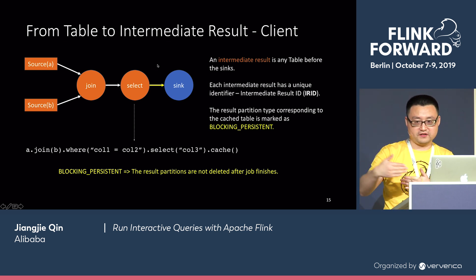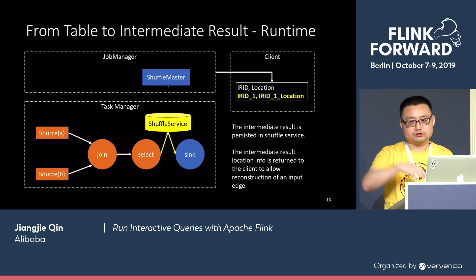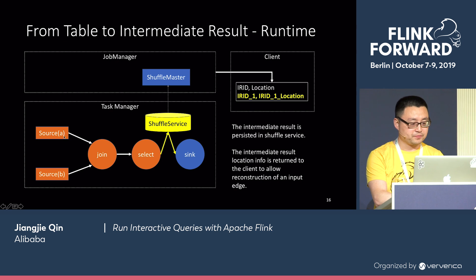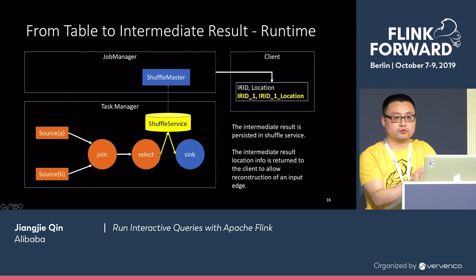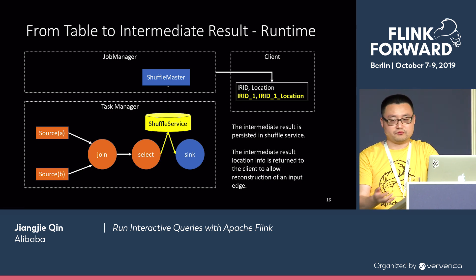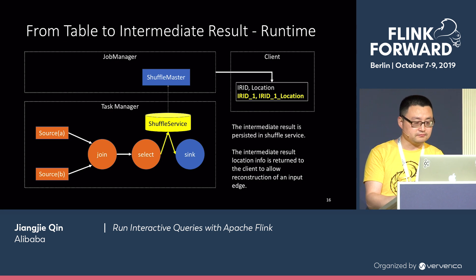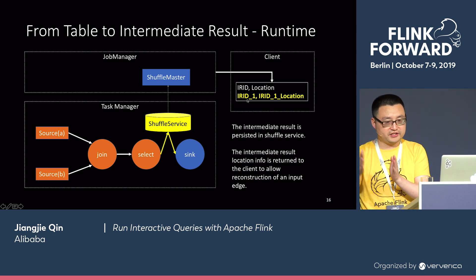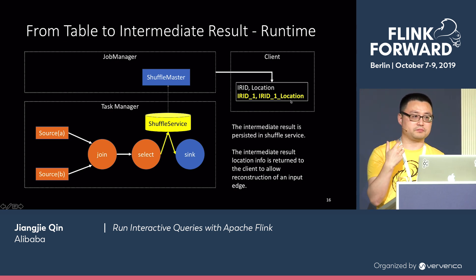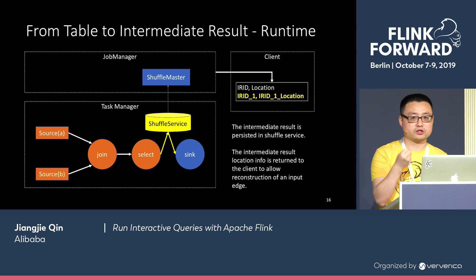Blocking persistent means the result partitions are not going to be deleted after the job finishes. This is like a flag we set on the result. When this job finishes, the Flink Task Manager won't remove the already-computed result. When we submit this DAG into the Flink cluster, the Task Manager — when it sees the blocking persistent edge — will write the result into the shuffle service and then write the result to the sink. The intermediate result is persisted in the shuffle service. Once the job finishes, the job master returns the intermediate result ID 1 and its location to the client, because the later job will need to rebuild this edge to know where to read the intermediate result from.